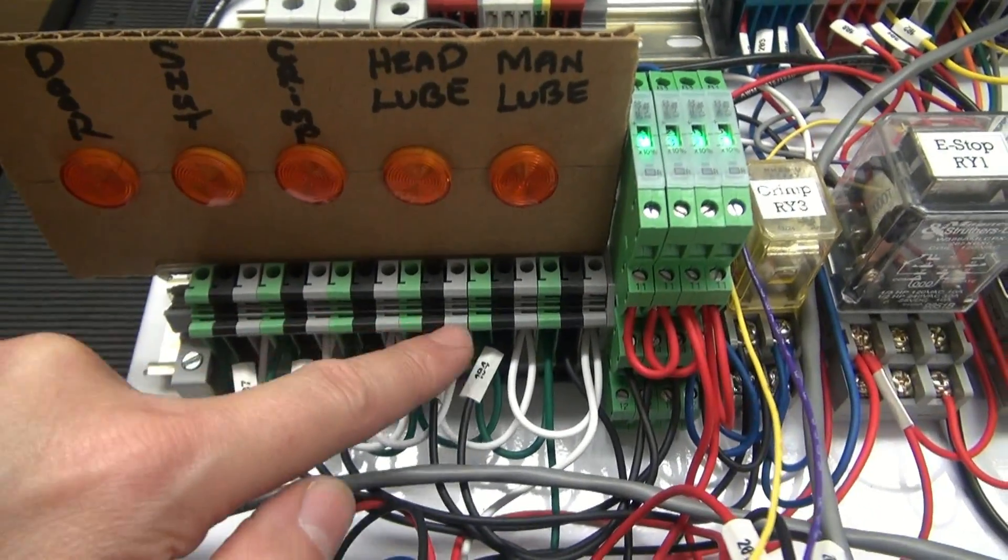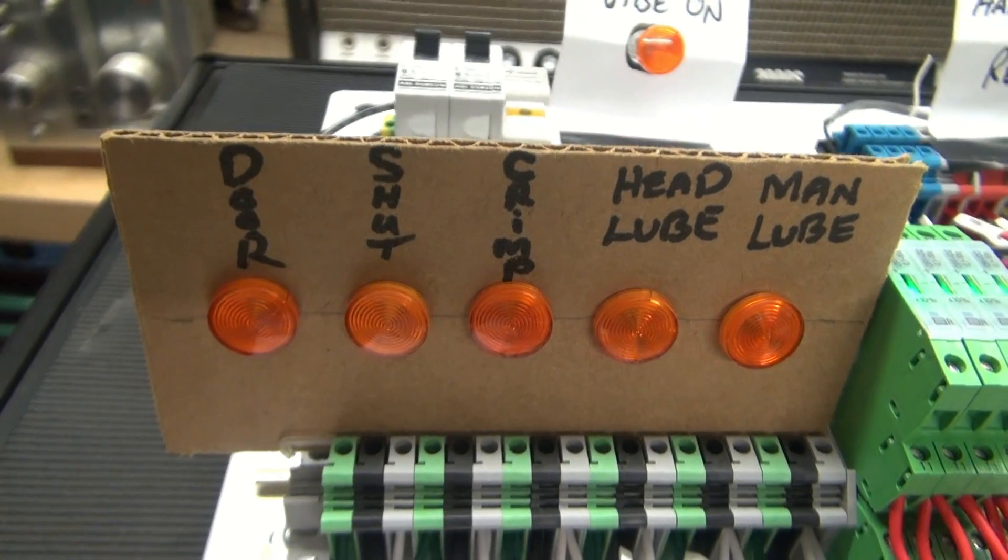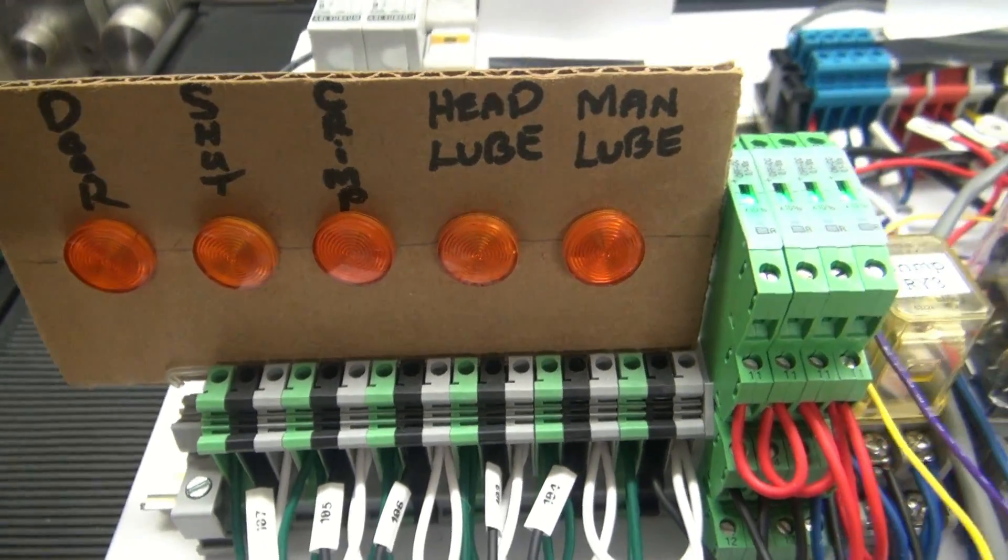Over here we have the output devices such as the door, the shuttle, your crimp operation, and your lubes.